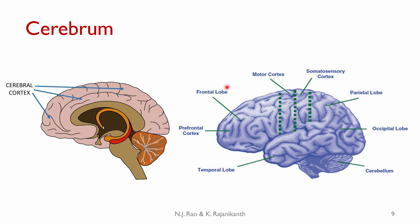There are lobes in this cerebrum: frontal lobe, temporal lobe, parietal lobe and occipital lobe. This structure at the back is called the cerebellum or small brain. Here you have the motor cortex and somatosensory cortex. This top portion is the cerebrum, this middle part is the limbic area or middle brain, and this lower part is the brain stem.